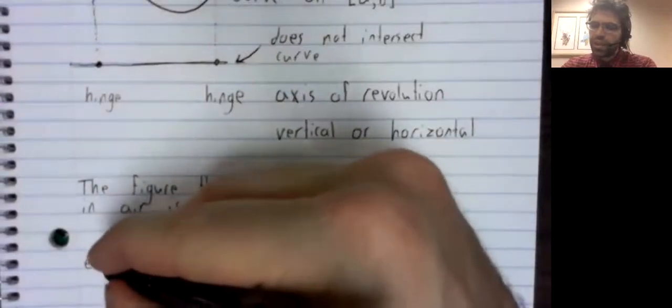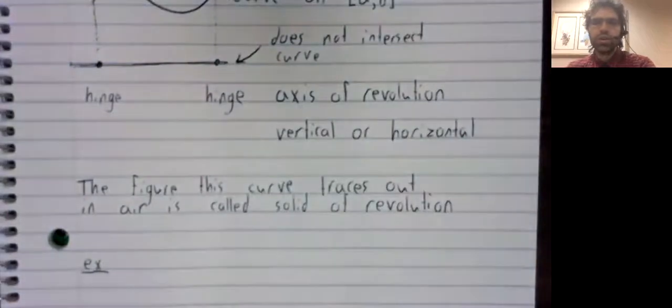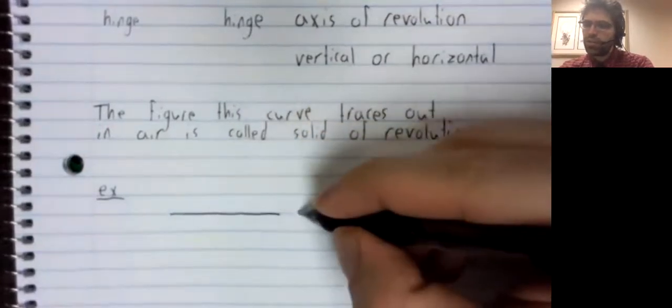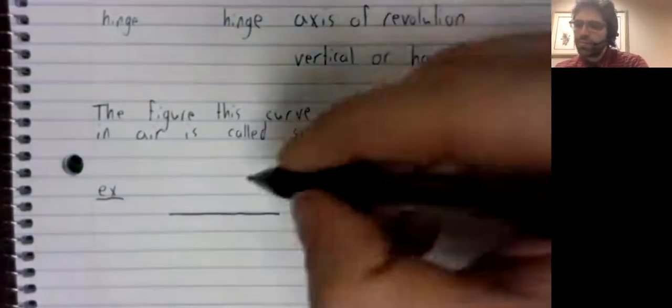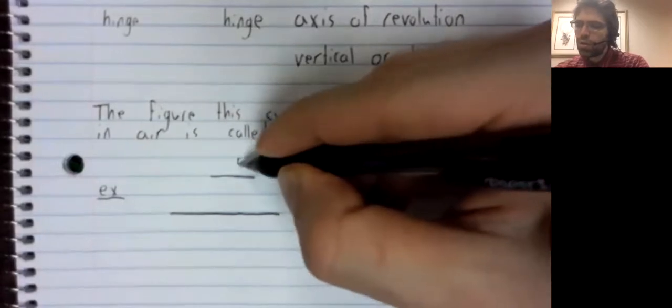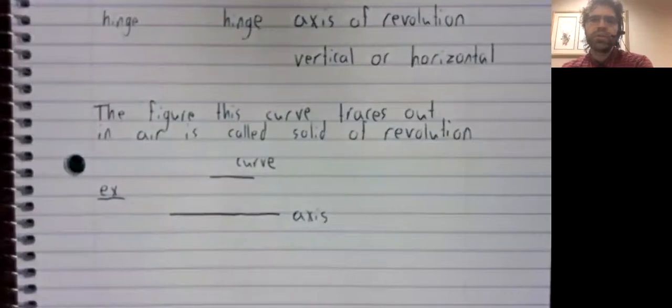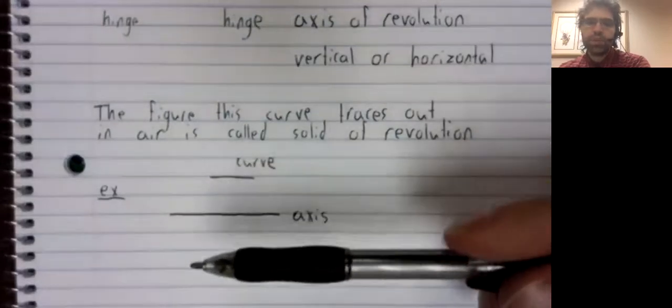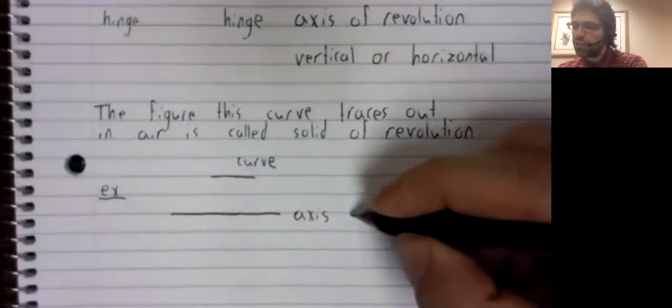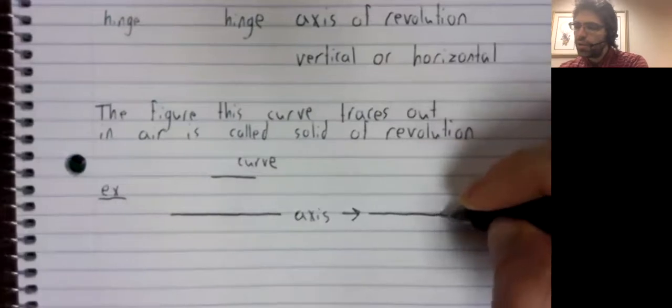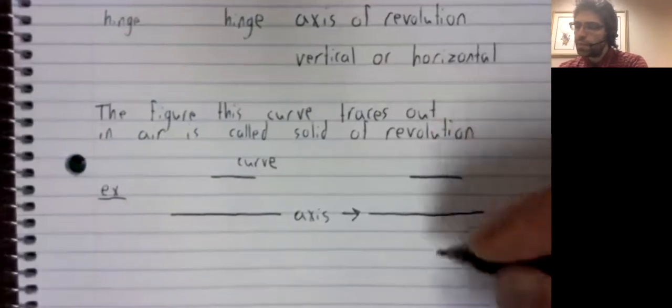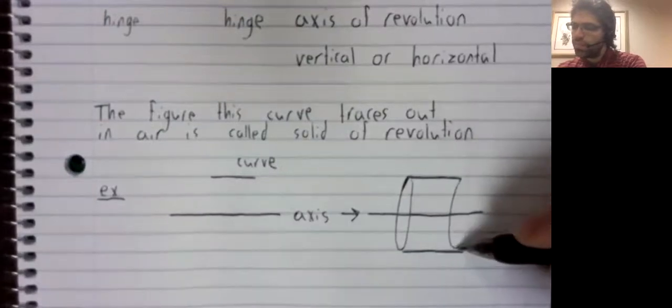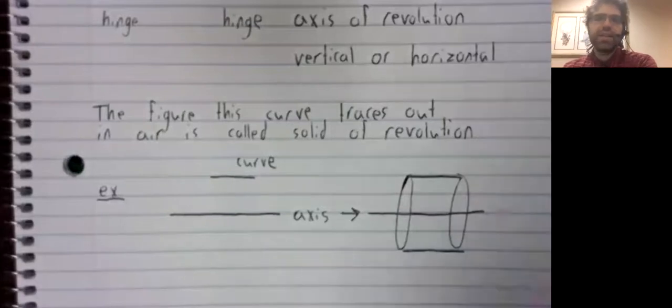So, a simple example, but one we'll have cause to use down the line. If we have a horizontal axis and our curve is a horizontal line segment, and we take this curve and rotate it around the axis to create a solid of revolution, the figure that results from this will be a cylinder.